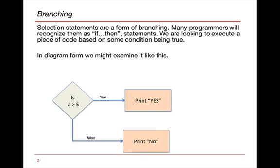Selection statements are a form of branching. Programmers will recognize them as if-then statements. If we're looking to execute some code based on a condition being true, we test the condition. If it's true, we'll execute a group of code or call methods. If it's false, we'll skip that code entirely.